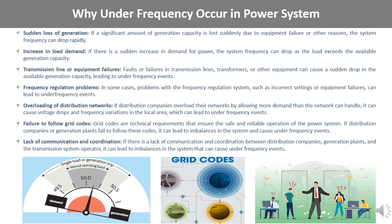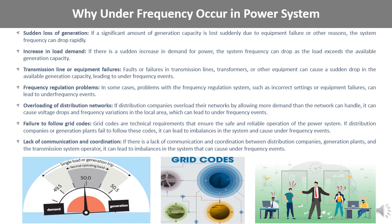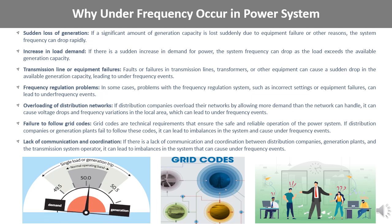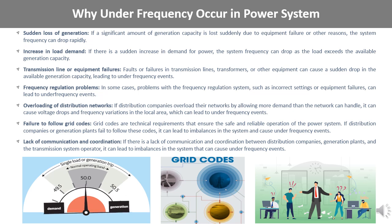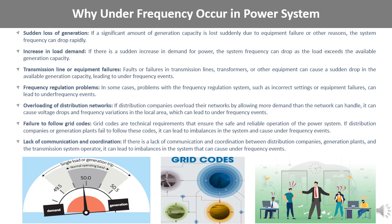Finally, a lack of communication and coordination between distribution companies, generation plants, and the transmission system operator can also lead to under-frequency events. When there is a lack of communication, it can be difficult to maintain balance in the system and respond quickly to unexpected events. In summary, there are many factors that can contribute to under-frequency events in power systems. By understanding these factors and taking steps to address them, it is possible to improve the reliability and stability of the power system.